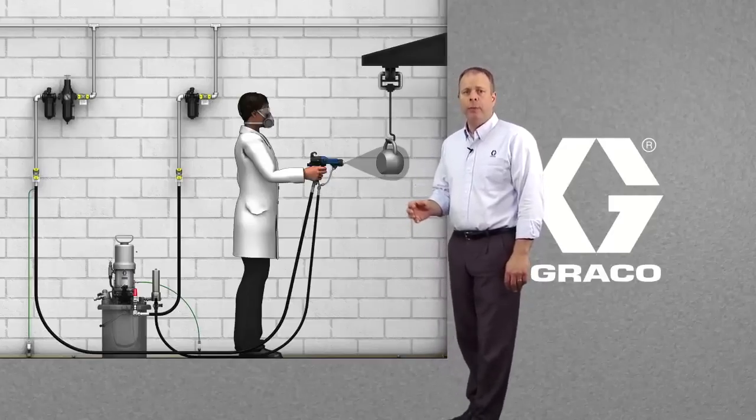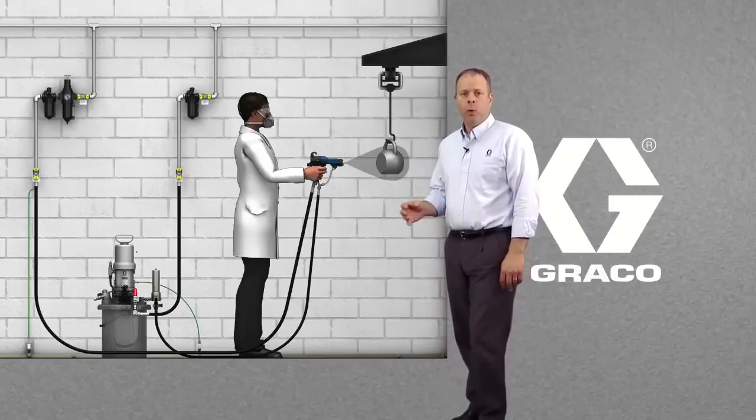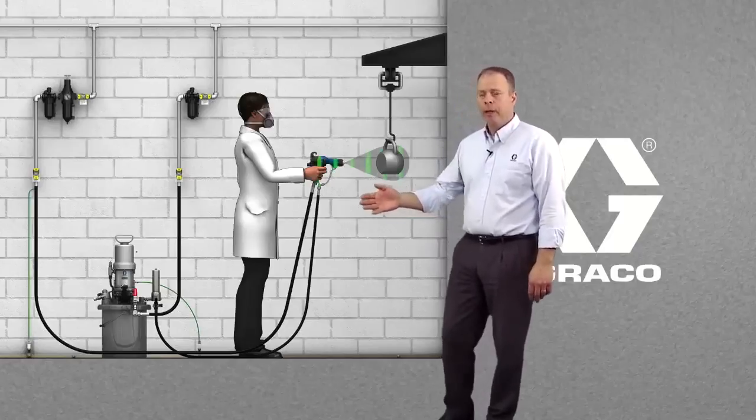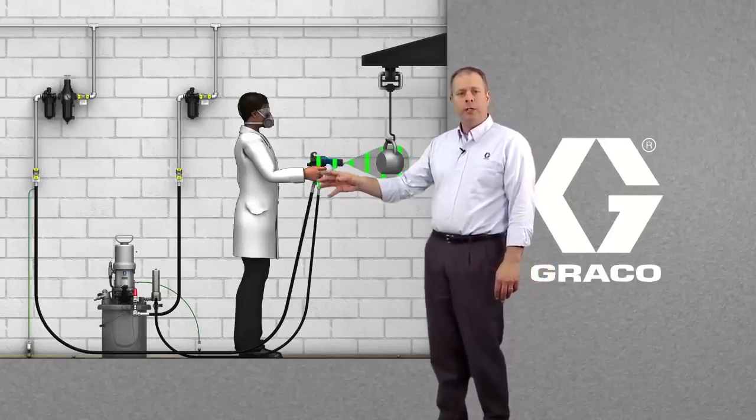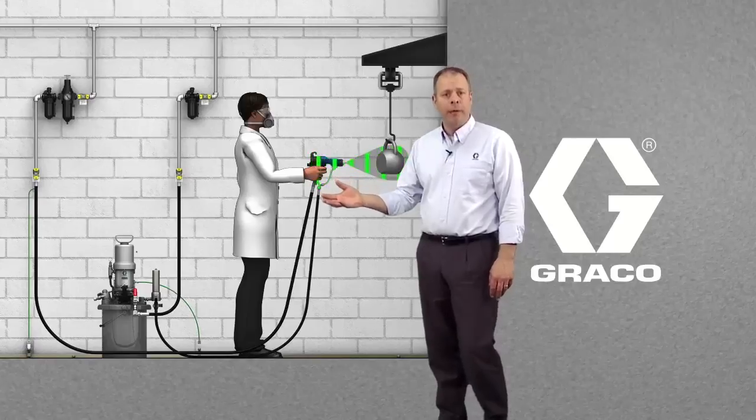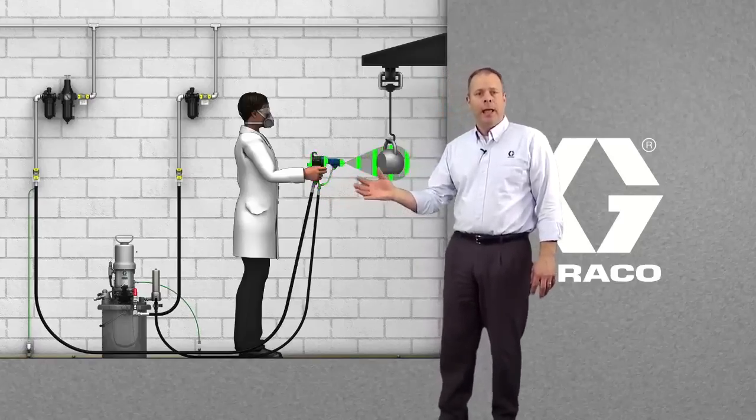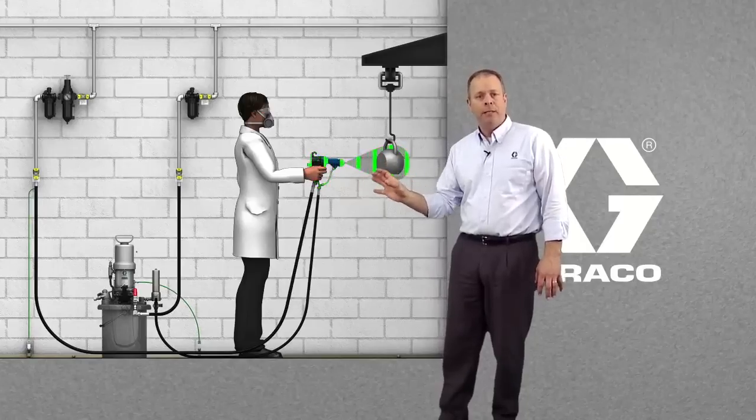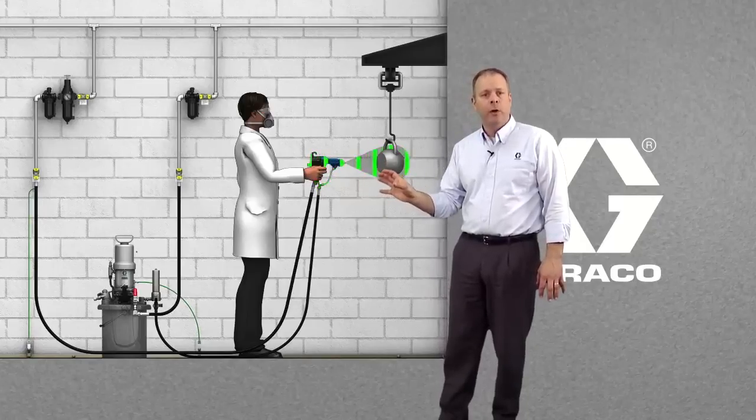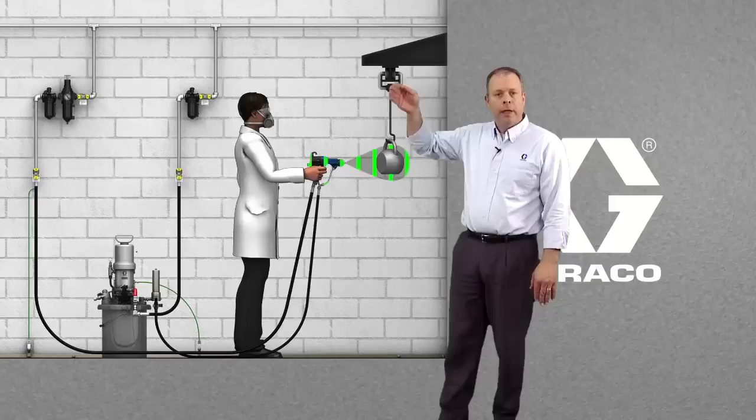We're going to start off with a little bit of an animation showing what's going on with the gun and the part. The electrostatic gun here is putting an electrical charge on the paint, building up the electrons on the paint, and that paint is then being transferred or attracted to this part that is grounded.